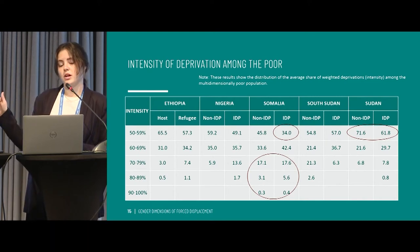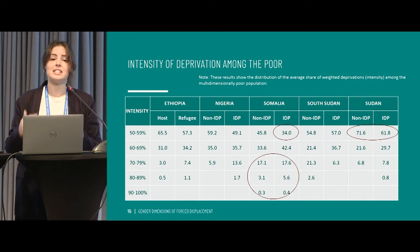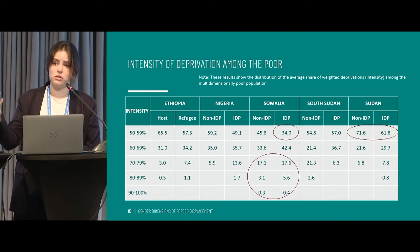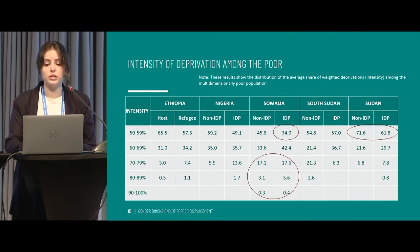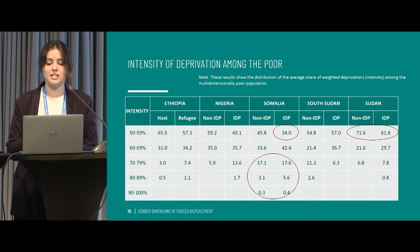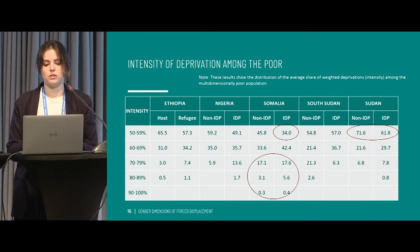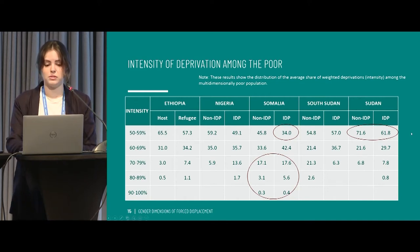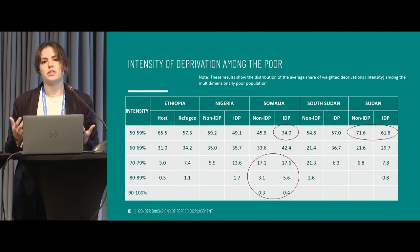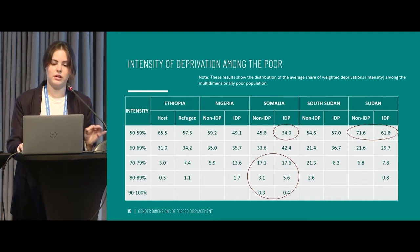This table shows the breakdown of the poor population by the intensity of their poverty, ranging from 50 to 100% — with 50% being the poverty cutoff used in our MPI. In Sudan, for example, 72% of the poor in host communities and 62% of the poor IDPs are in the lowest intensity band, relatively close to the poverty line. Whereas in Somalia, the country with the highest average intensity across both groups, the distribution is much wider. This is the type of methodological tool the MPI provides — breaking down in what ways the poor are poor.